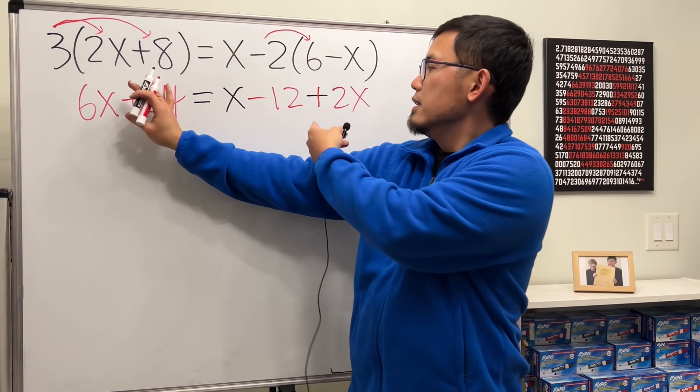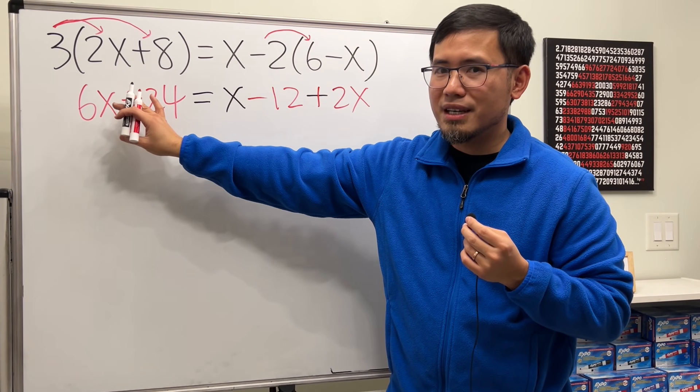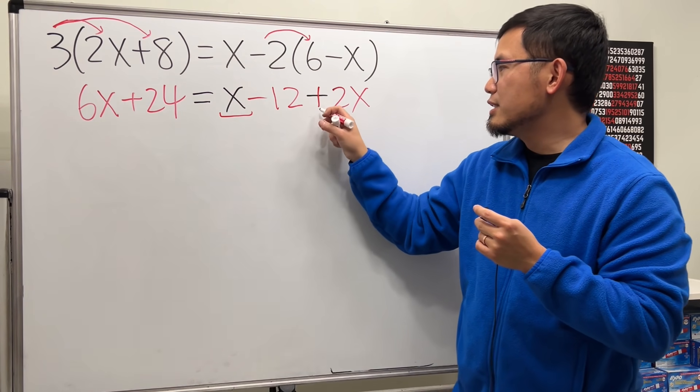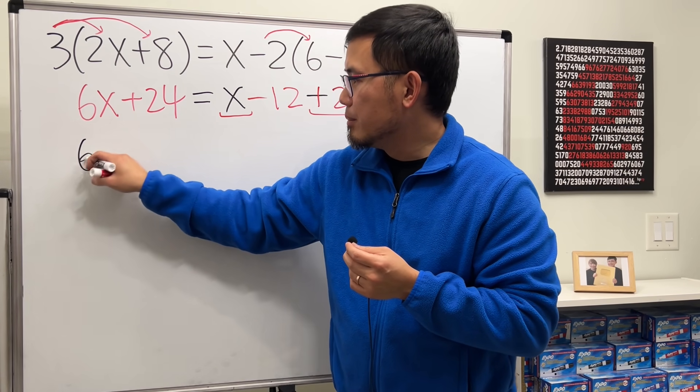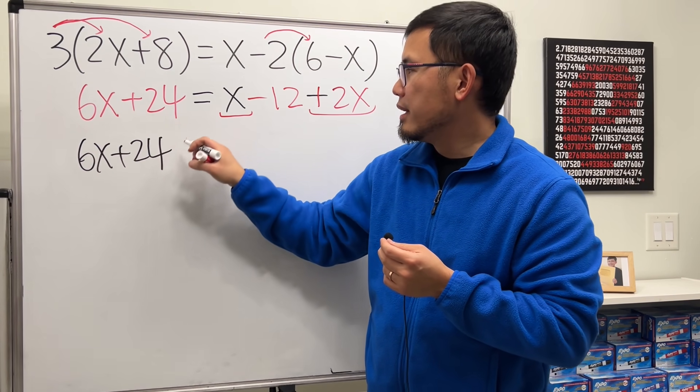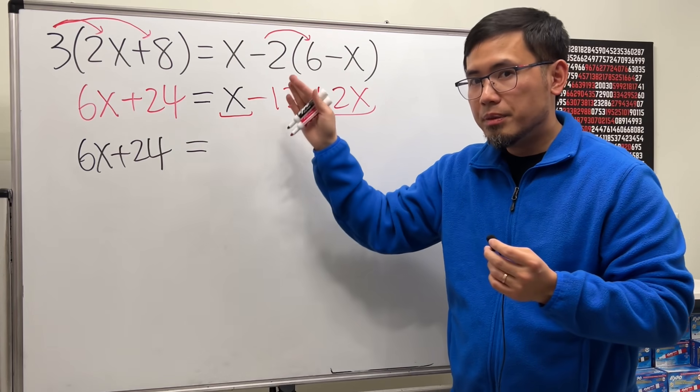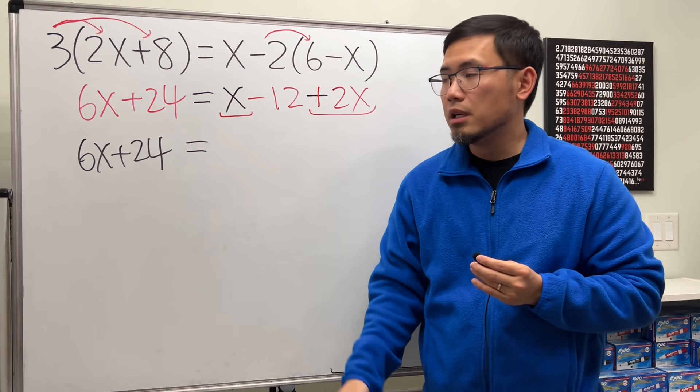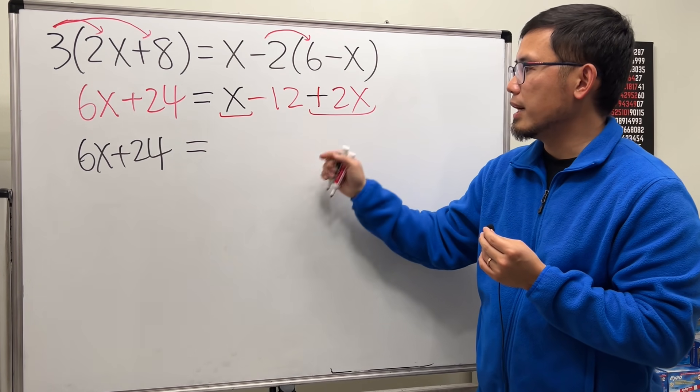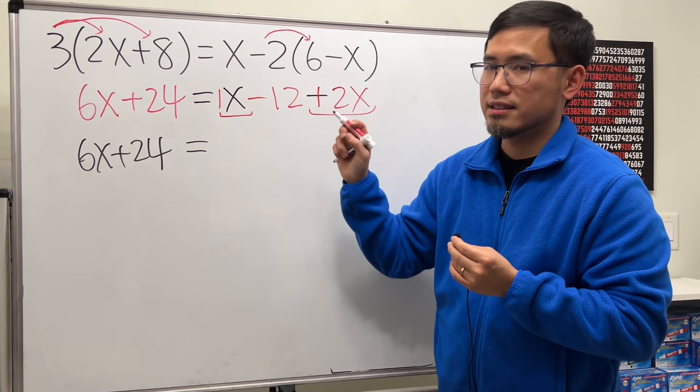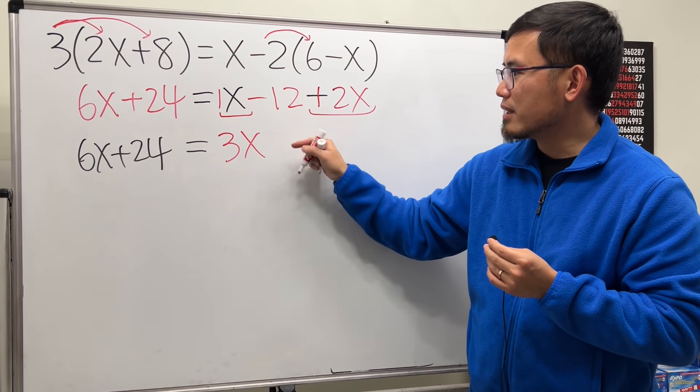And then we look at this side. We have x minus 12 plus 2x. Are there any things that we can combine? Yes. This right here has x, this right here has 2x. So we can combine the x terms. So let's just write this down because we didn't do anything with them. And then bring down equal sign. And the small tip is, make sure you line up with the equal sign, because this right here will help you to organize your steps so you can clearly see what's going on. And right now we're just doing x plus 2x. This is saying we have 1x. 1x plus 2x, we have a total of 3x. And then bring down the minus 12 after that.